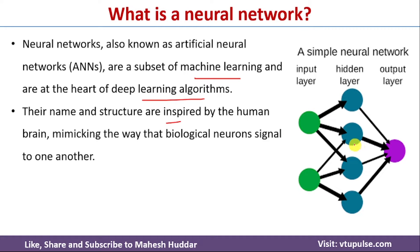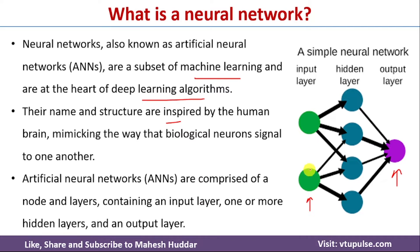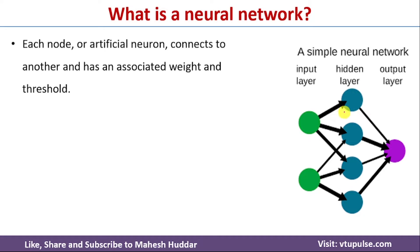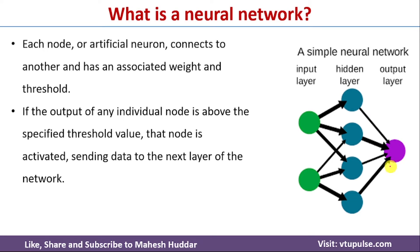If you look here, this is a simple neural network. This is called the input layer and this is called the output layer. There may be multiple number of hidden layers; in this case we have only one hidden layer. Each of these layers contains multiple computation units known as nodes. Each of these nodes are connected with the next layer's nodes — the input layer nodes are connected with the hidden layer nodes, and the hidden layer nodes are connected with the output layer nodes.